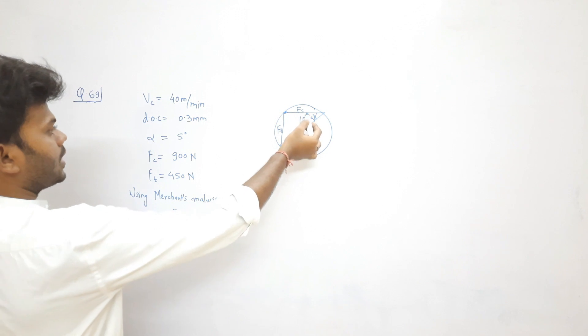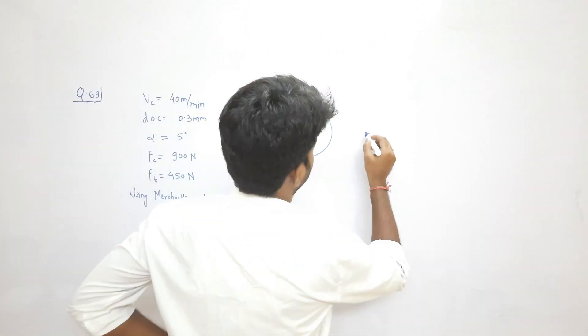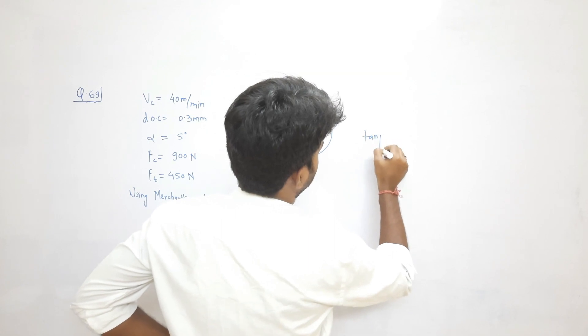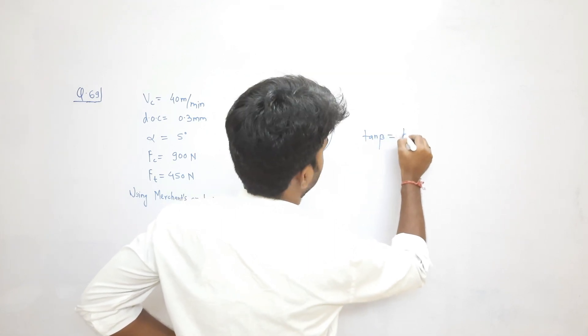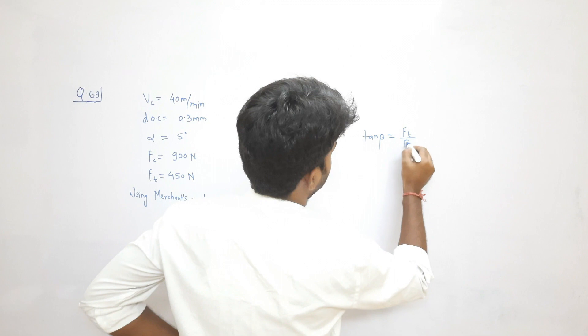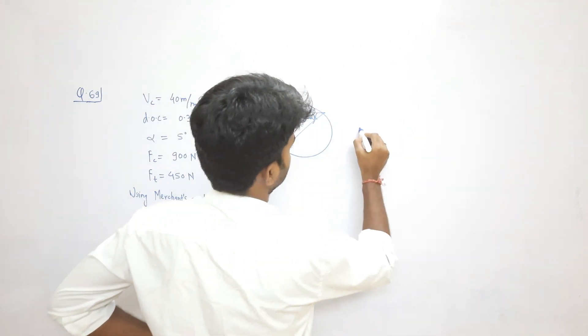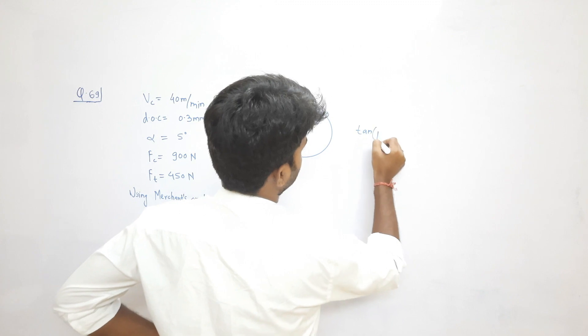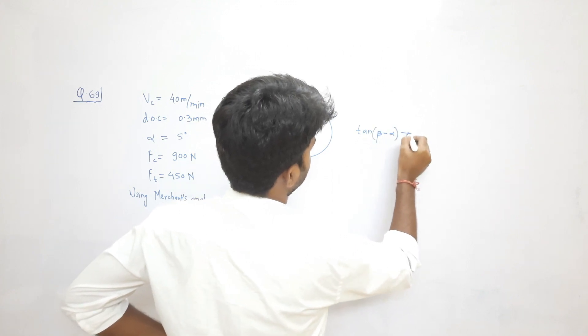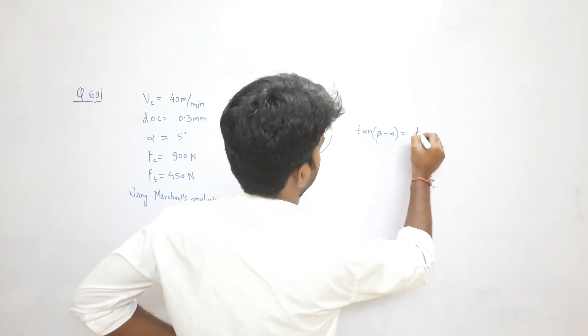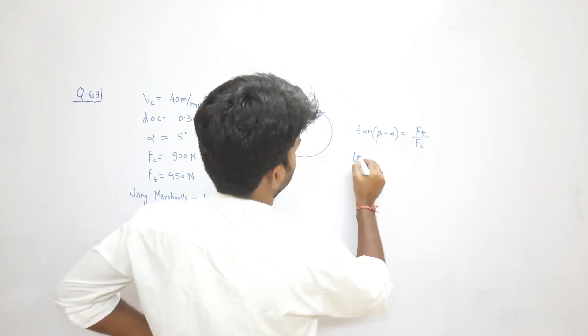Alpha is known, FC is known, FT is known, so I can easily find beta. From this triangle, we get tan of (beta minus alpha) equals thrust force divided by cutting force.